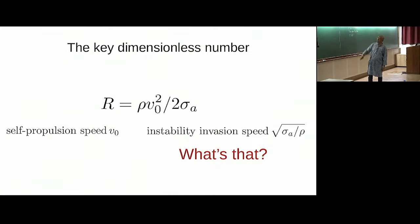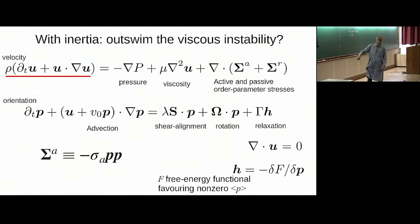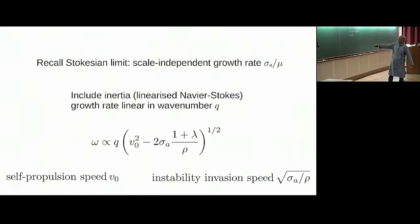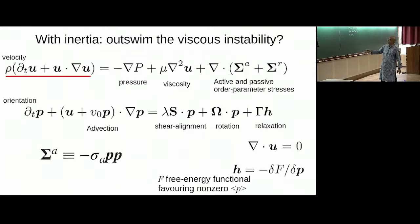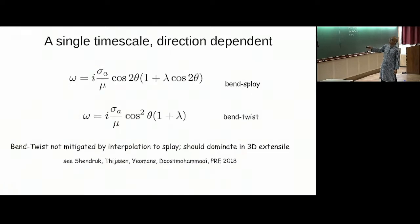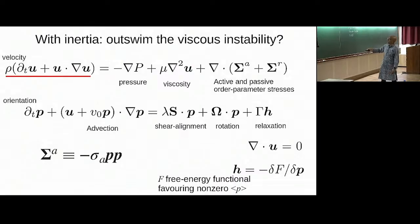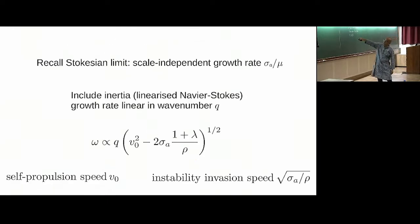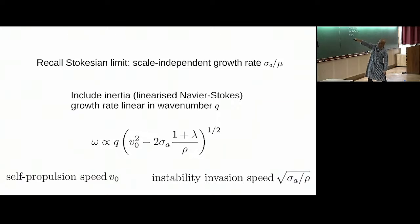If you linearize about an aligned state and watch perturbations grow, without inertia the growth rate is simply active stress over viscosity. The moment you take inertia into account, the growth rate is linear in wavenumber at small wavenumbers. Without motility, the coefficient of that linear-in-q growth rate is the square root of active stress divided by mass density — that speed tells you how long an initial perturbation takes to grow by order one on a length scale 1/q.